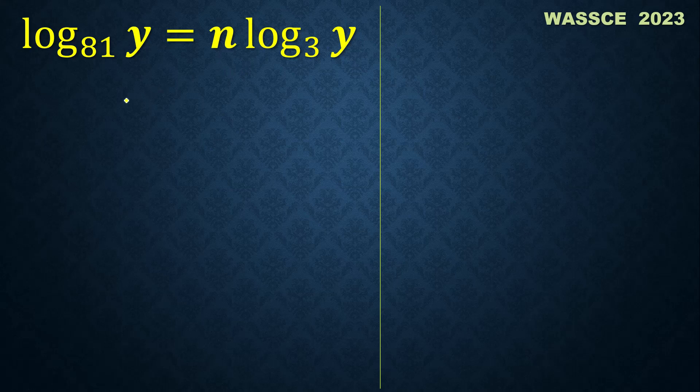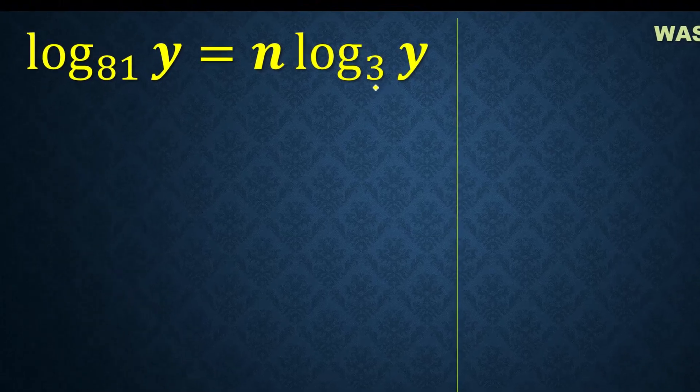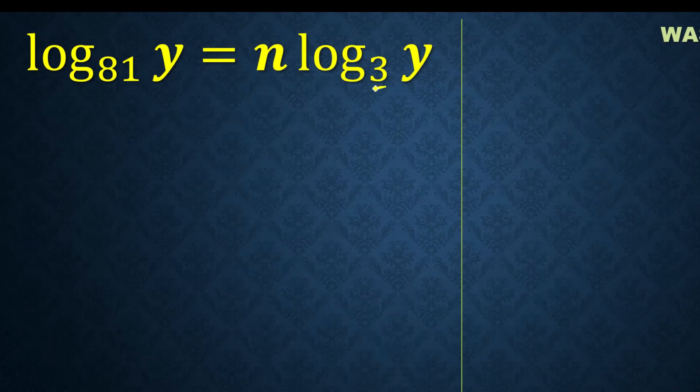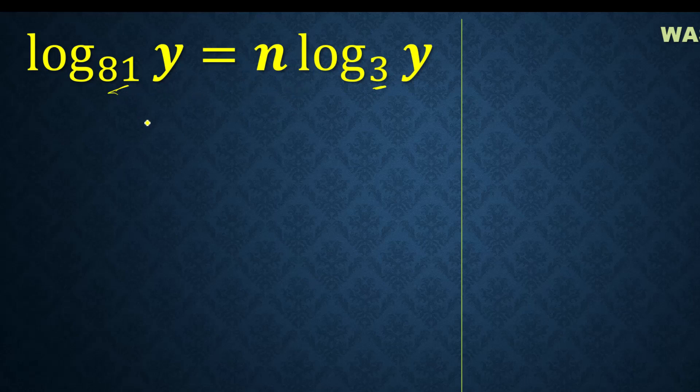Now let's look at the bases here. We have 3 here and we have 81 here. And we know 3 raised to 4 is the same as 81. So 3 times 3 times 3 times 3: 3×3 is 9, 9×3 is 27, 27×3 is 81.